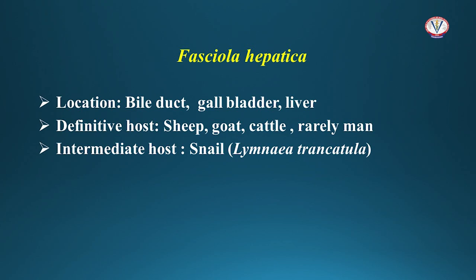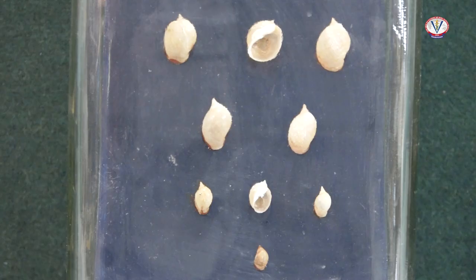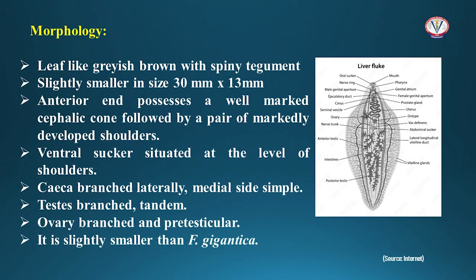Fasciola hepatica, the liver fluke, is present in the bile duct, gallbladder, and liver of sheep, goat, cattle, and rarely man. The intermediate host is Lymnaea truncatula. It has a broad leaf-like body, grayish-brown in color with a spiny tegument. The anterior end possesses a well-marked cephalic cone, followed by a pair of well-developed shoulders. The ventral sucker is situated at the level of the shoulders. The caeca are branched laterally and simple on the medial side. The testes are branched and tandem in position. The ovary is also branched and pre-testicular. It is slightly smaller than Fasciola gigantica.